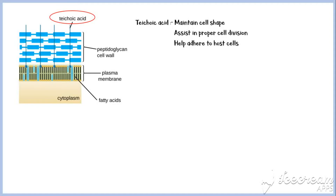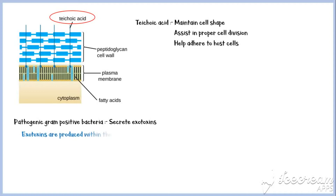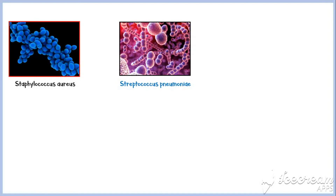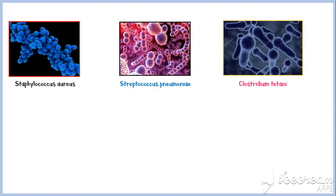Moreover, pathogenic gram-positive bacteria secrete exotoxins, which are produced within the bacterial cells and released into the host tissues. Common examples of gram-positive bacteria are Staphylococcus aureus, which is responsible for many skin diseases and abscesses; Streptococcus pneumoniae, which is responsible for bacterial pneumonia; and Clostridium tetanus, which is responsible for tetanus.